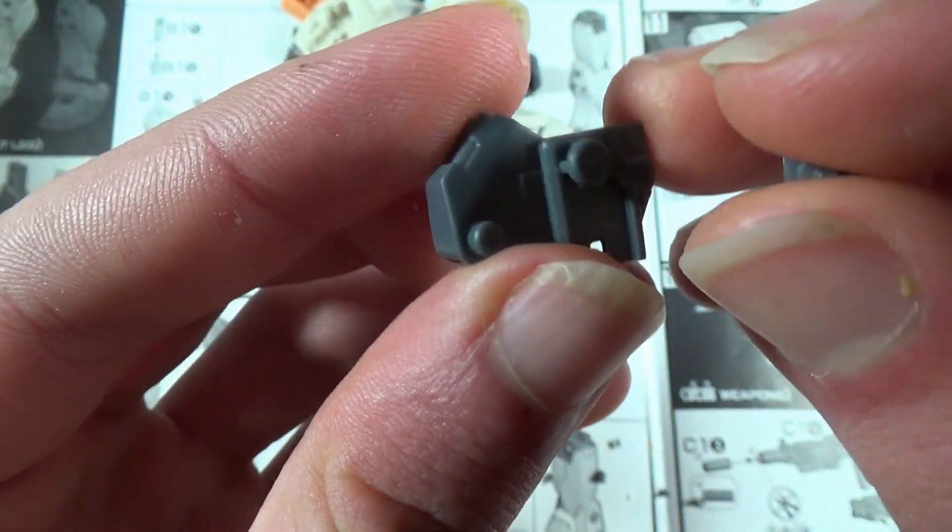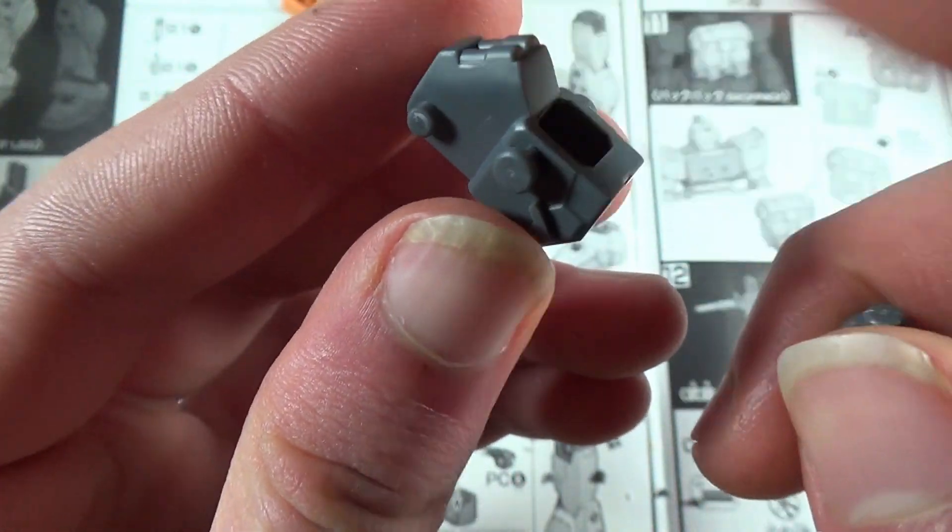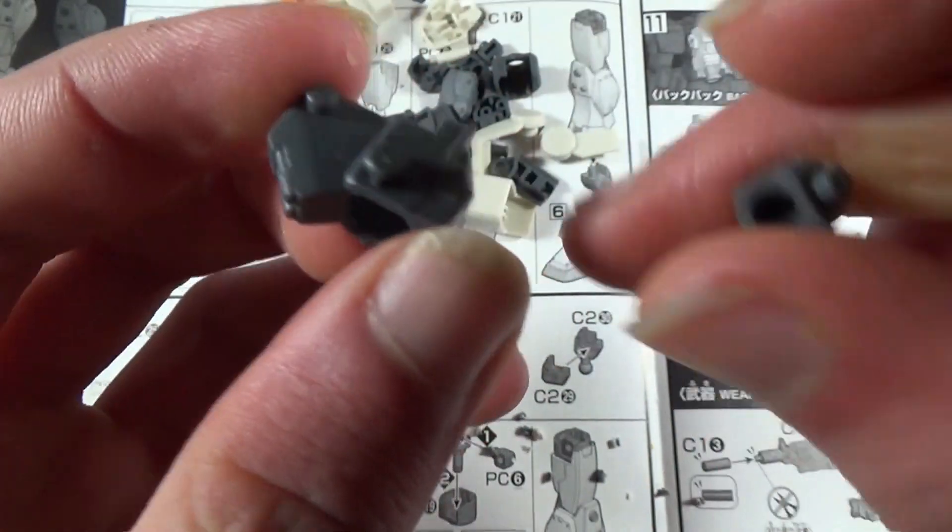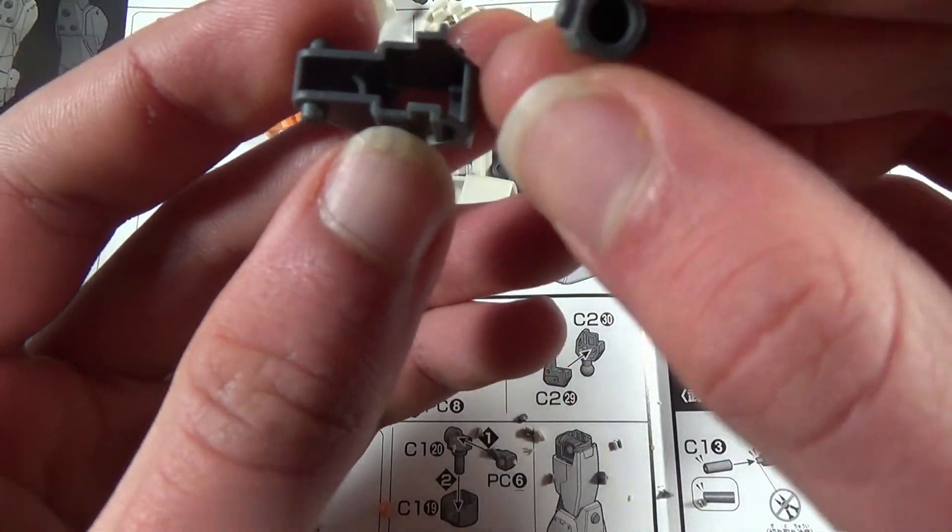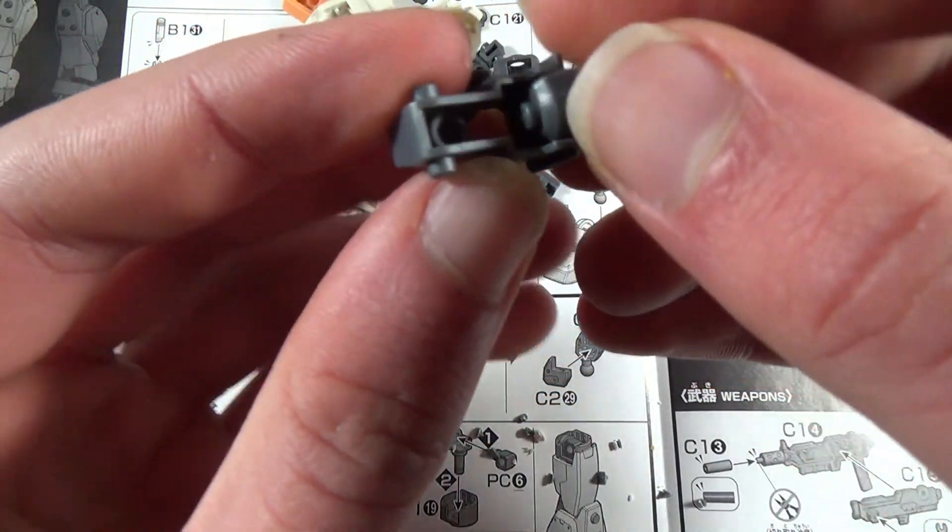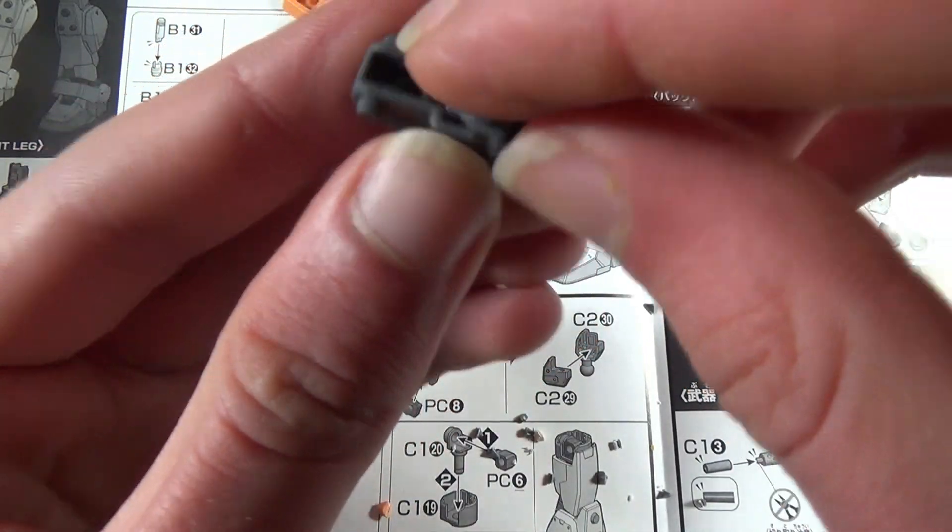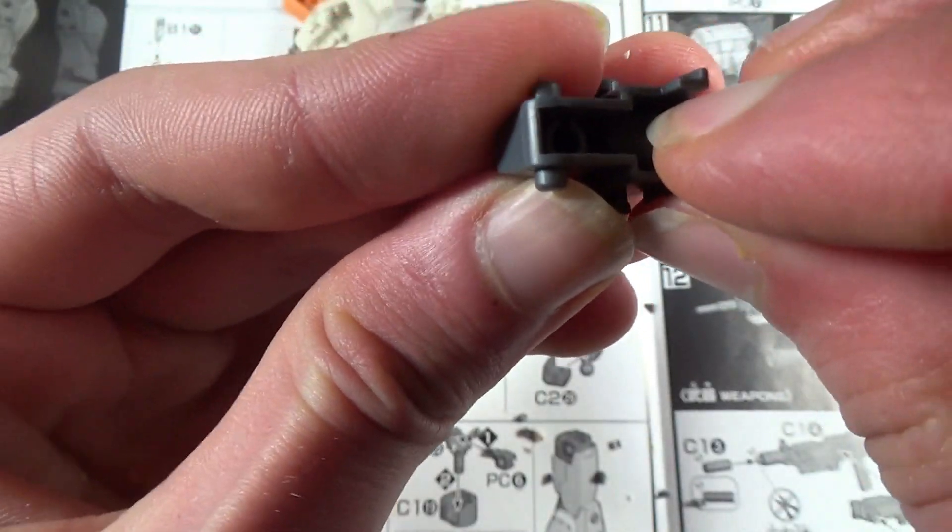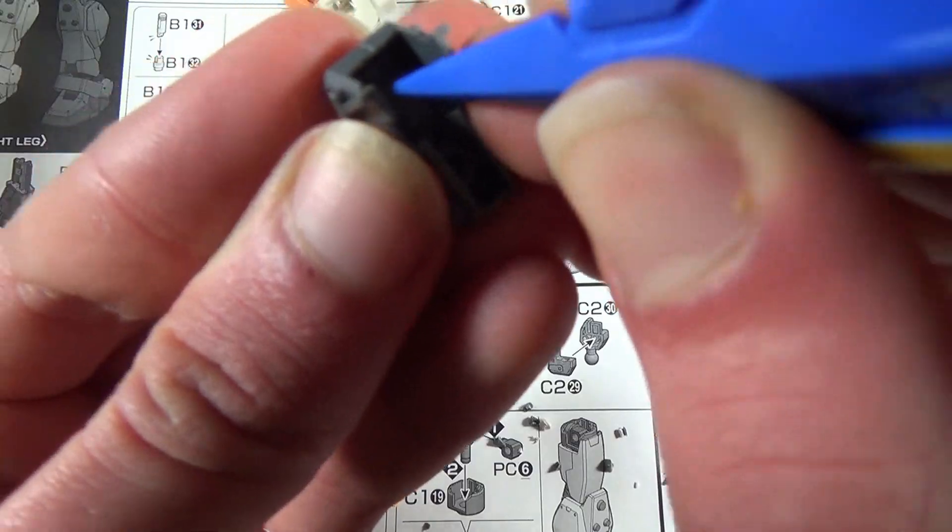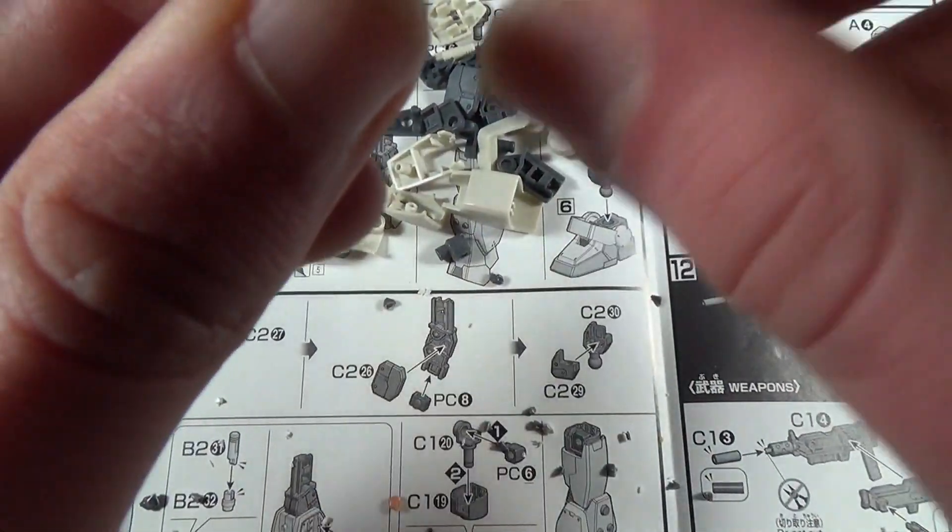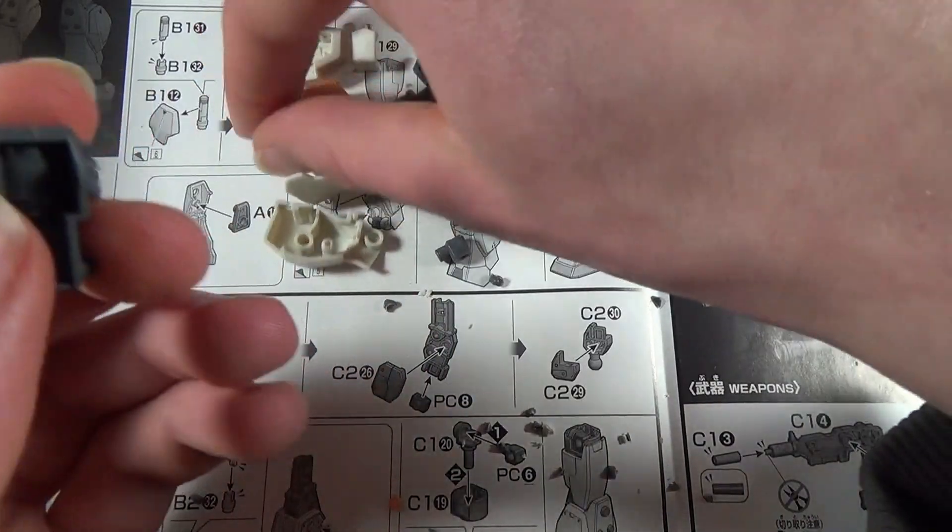So interestingly enough, the ankle for this kit is actually a single piece, instead of the typical kind of two-piece sandwich that I'm used to seeing on these kits. So that's kind of interesting. It looks like this polycap is just going to drop down there. It's a little awkward getting that polycap in there, but it should pop in just like that.